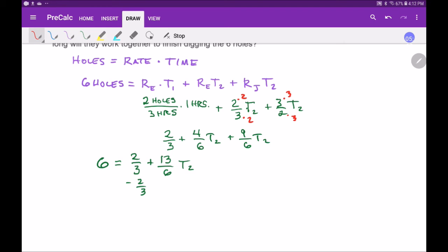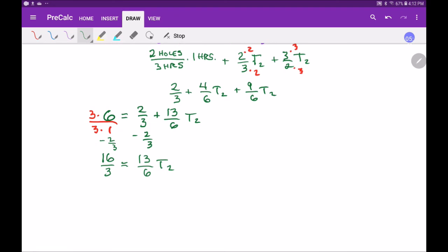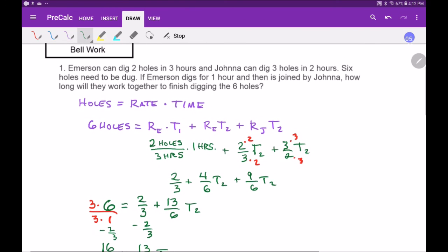All right, so I'm going to subtract my two thirds from this side. If I wanted a common denominator I would say 18 minus 2 is 16 over 3, equals 13 over 6 t2. I subtracted two thirds from both sides.